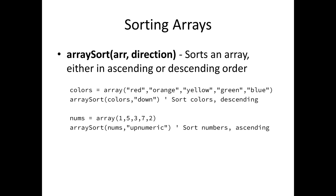Here I've got two sort examples. The first one sorts the colors array 'down', so the word yellow will come first and blue will come last. The second example, array sort nums with 'upnumeric', will sort the numbers in ascending order: one, two, three, five, seven.